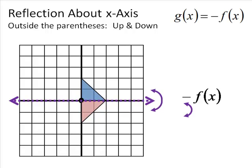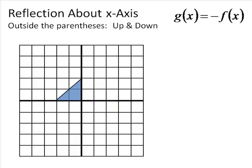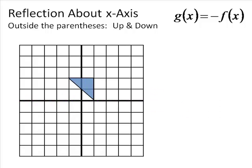Just like if you folded that piece of paper up, it would mirror on the other side — you're just flipping it over. Not too bad. This goes for anything: negative f of x means you go up and down and flip. It doesn't really matter what the shape is; you're still just doing the up-and-down reflection.